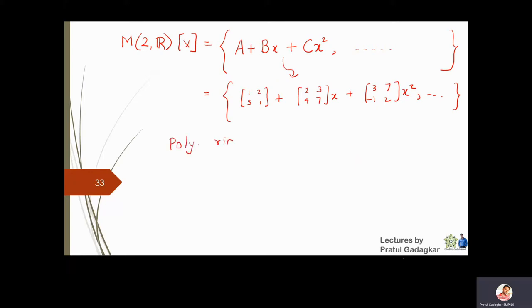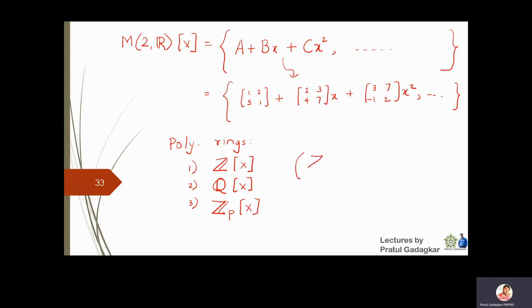In this course we are going to focus on three types of polynomial rings: polynomials with integer coefficients Z[x], polynomials with rational coefficients Q[x], and polynomials with coefficients in Z_p. Note that Z is not a field, but Q and Z_p both are fields.